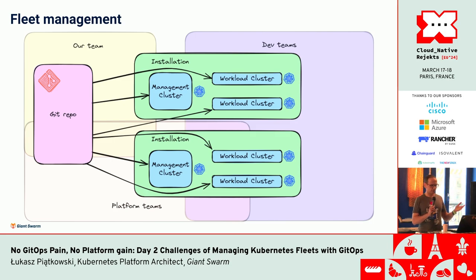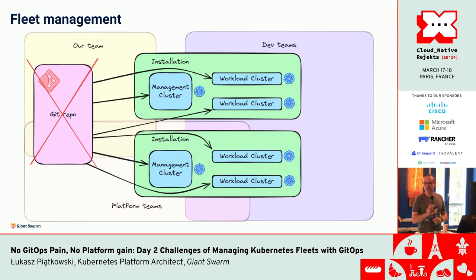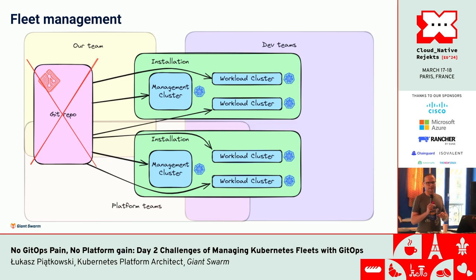You have a fleet and everything is done. Well, not really. The problem is that this is very oversimplified, especially on the left side. This Git repository component turns out to be pretty critical. There are problems.